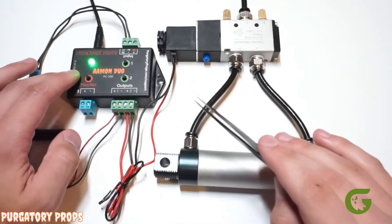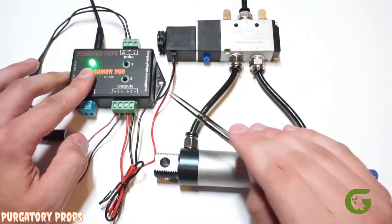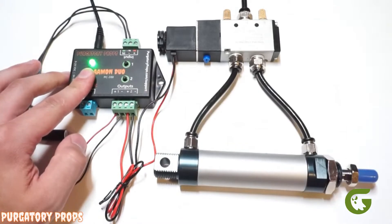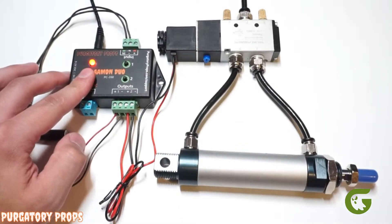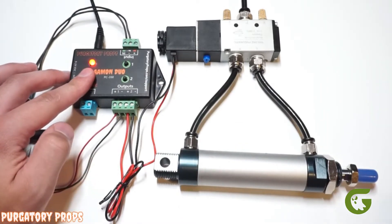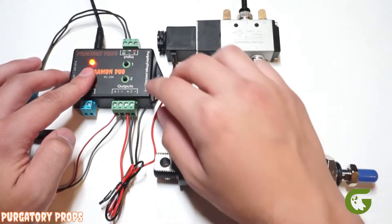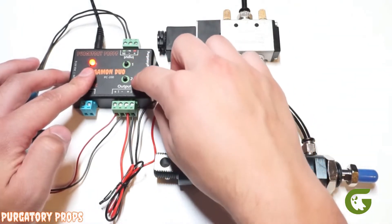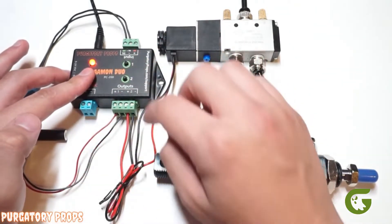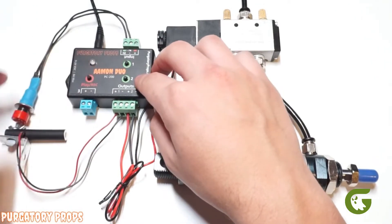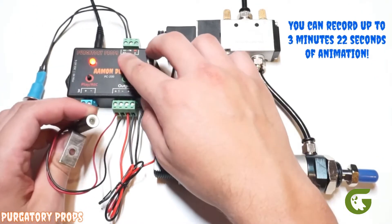So to record, all you need to do is hold the play record button until the LED turns red. Now when you release this button it will immediately start recording. So when you do start recording you're going to push one and two and that will control the outputs.